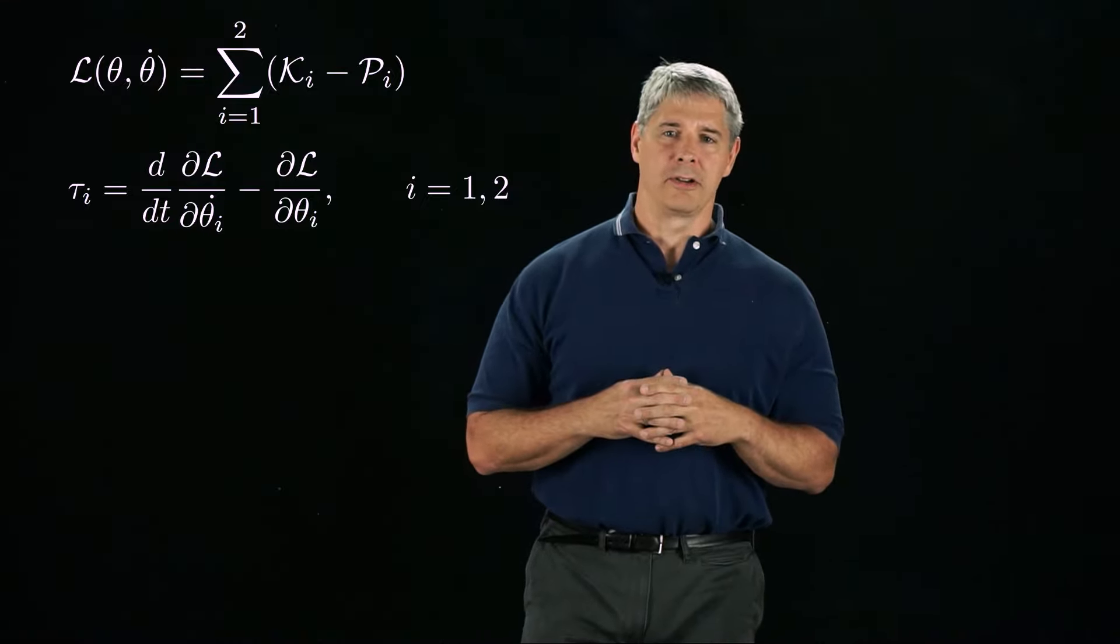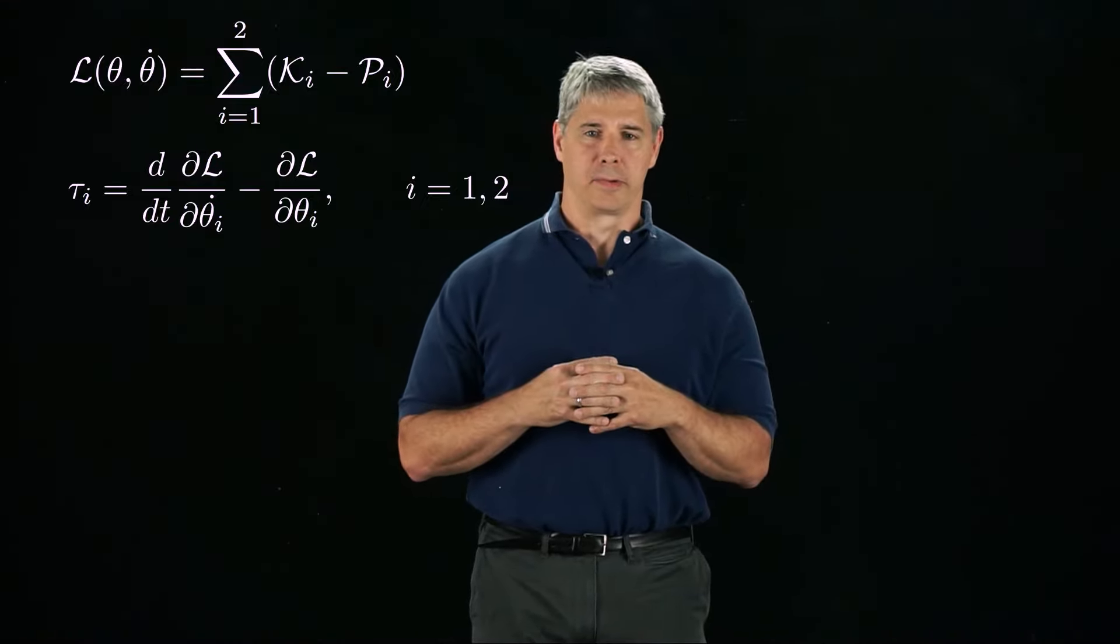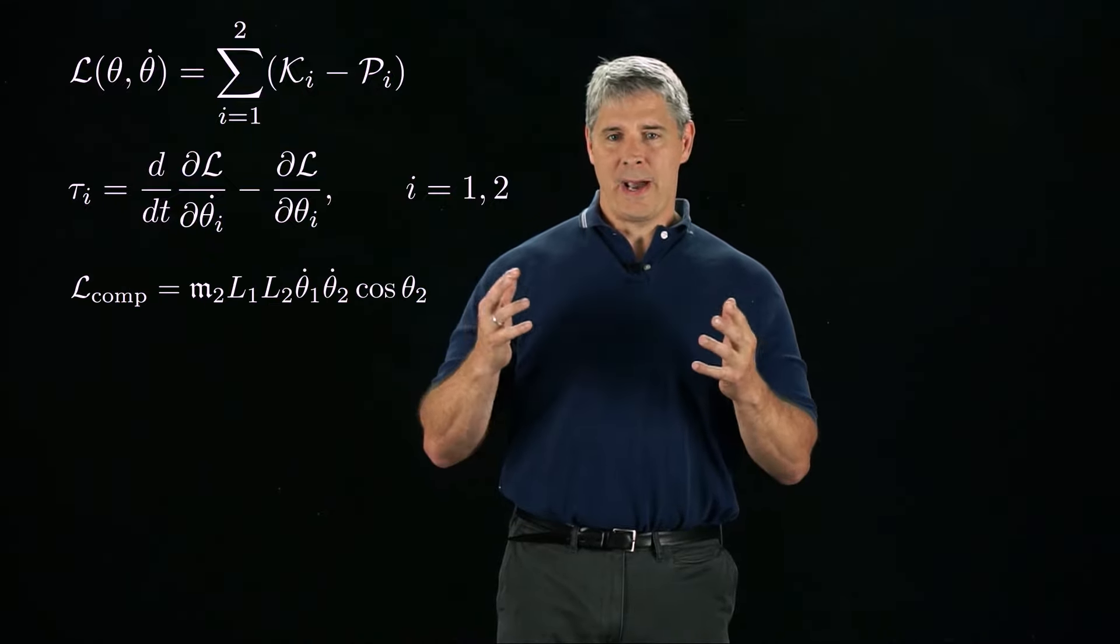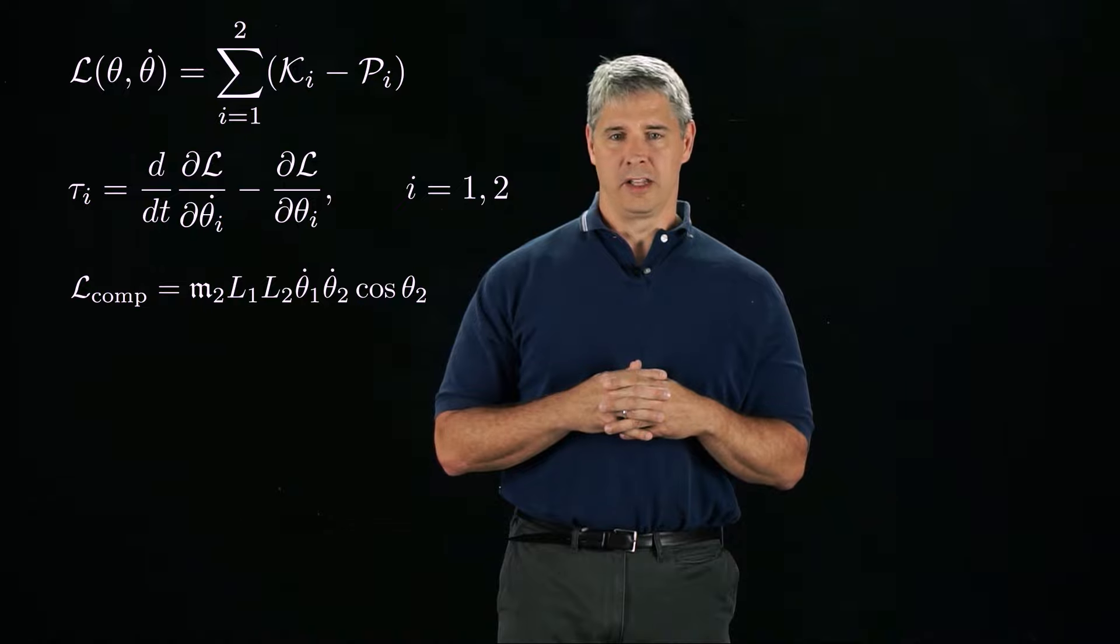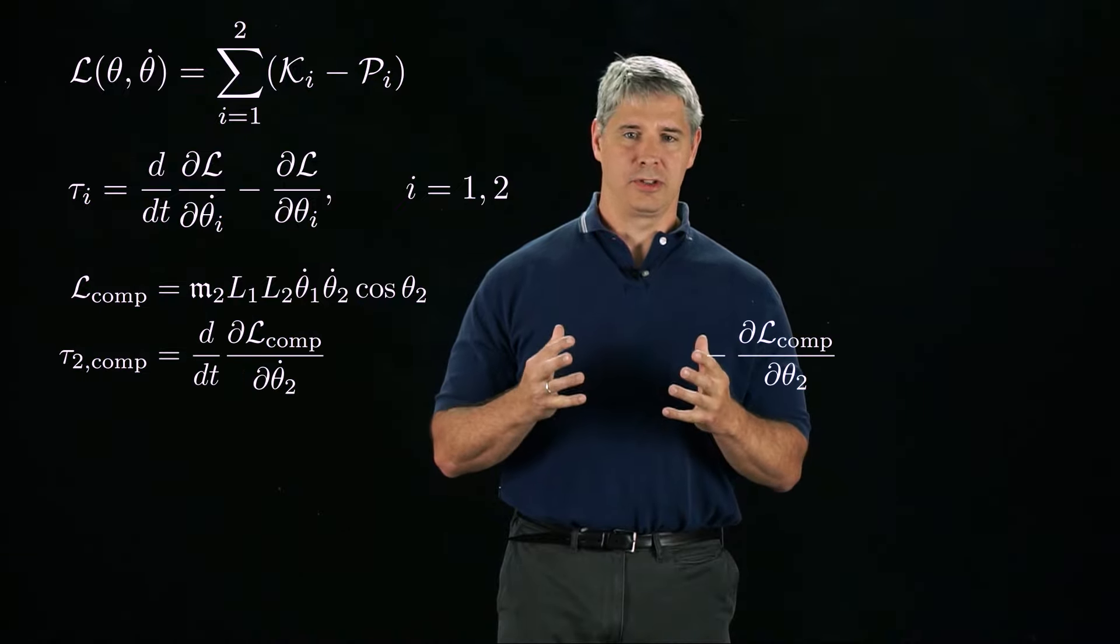This is tedious to do manually, but let's look at how we would calculate the derivatives for one particular component of the Lagrangian, which I'll call Lₒₘₚ. The impact of this component of the Lagrangian on the torque at the second joint is τ₂ comp.